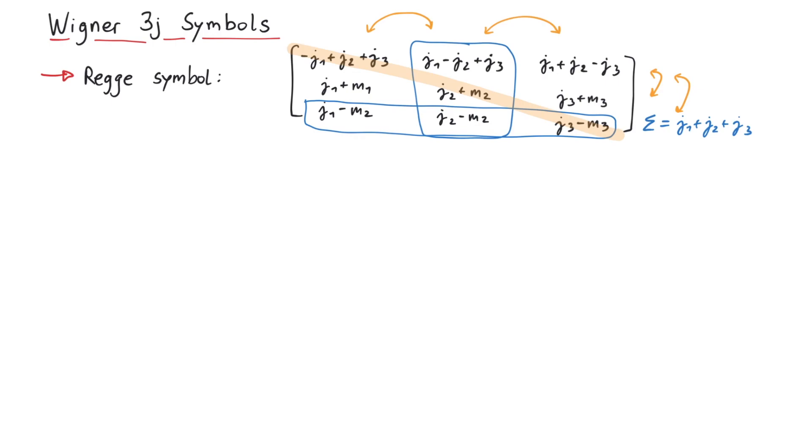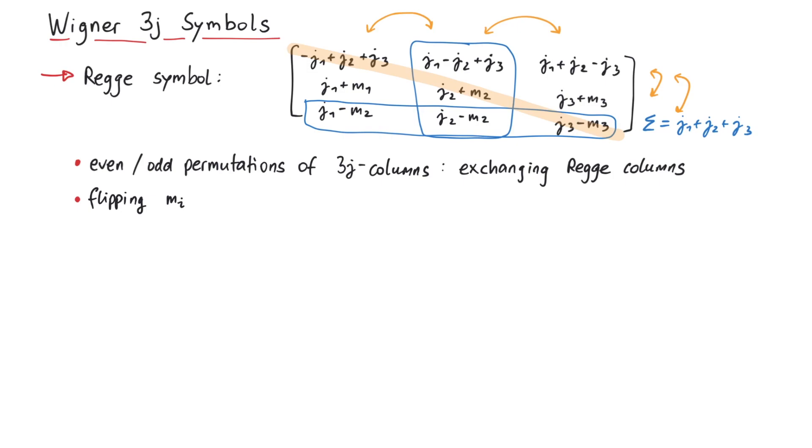However, mirroring along the other diagonal is not an independent operation, so we don't count it. Now, every symmetry operation that we mentioned earlier can be expressed via some equivalent operation on this Regge symbol. Here's how. First, the even and odd permutations of the columns correspond to exchanging two columns in the Regge symbol. Next, if we exchange the second and third row, this corresponds to flipping the sign of the magnetic quantum numbers. Mirroring along the main diagonal, like doing a matrix transpose, corresponds to the first Regge symmetry. And exchanging the first and third row corresponds to the second Regge symmetry.